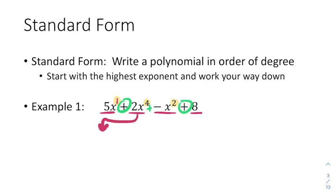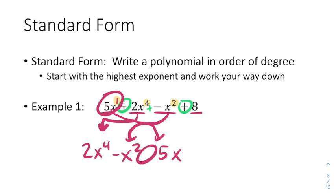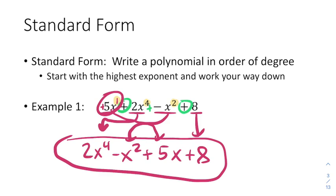We're going to rewrite this expression to put the highest degree first. So 2x to the fourth is going to come first — it's a positive 2x to the fourth, but we don't need that plus sign if it's in the front. The next highest degree is x squared, and it's a negative x squared, so we put that next with a subtraction symbol. Then positive 5x comes before the constant, so we put a plus in between, and finally plus 8.